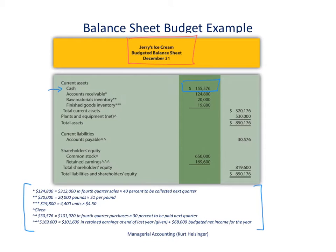The next item is accounts receivable, and that balance also comes from the cash budget. The very top part of that cash budget had the projections of cash received related to sales. We made the assumption that we would collect 60% of the quarter's sales in the quarter of sale, and that 40% would be collected in the following quarter. In the fourth quarter, we expected sales of $312,000. 60% would be collected during the fourth quarter, but 40% would still be outstanding at the end of the year. So 40% of $312,000 is where we get the accounts receivable balance of $124,800.